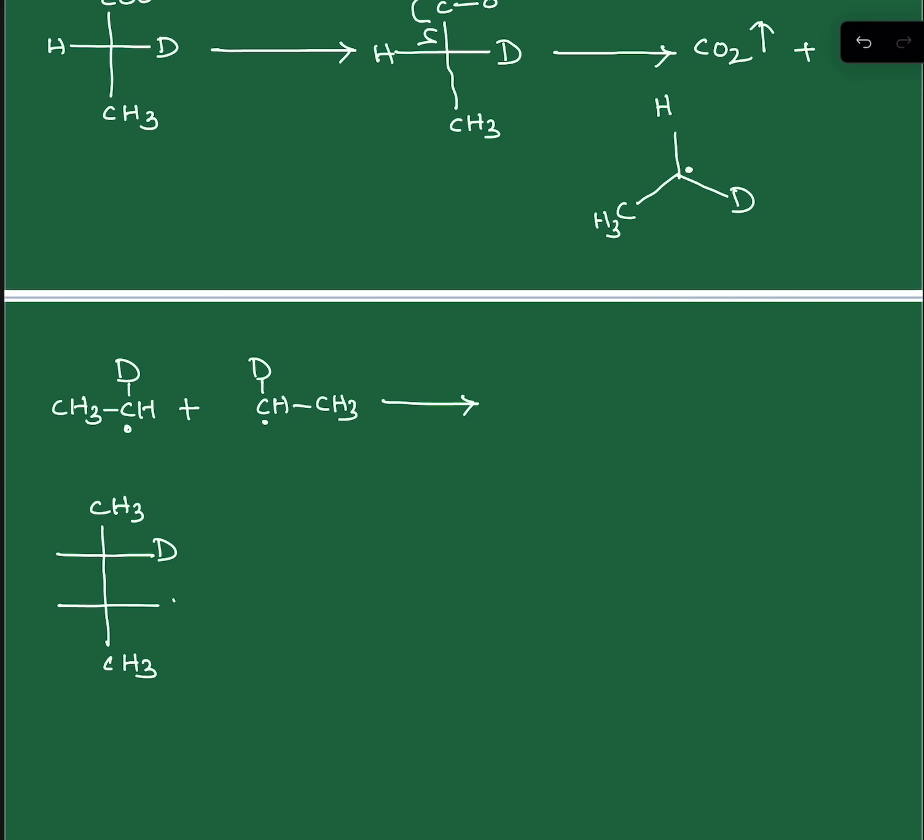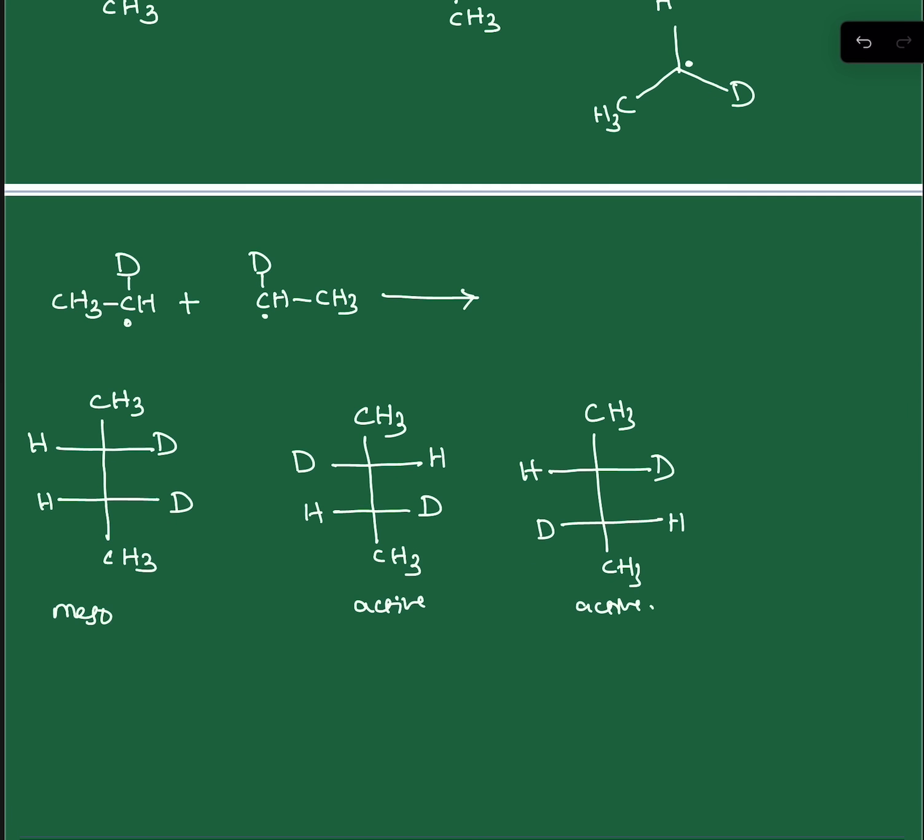Here we have CH3, CH3, deuterium, deuterium, hydrogen, hydrogen. And this is a meso structure, a mesoisomer. Next possibility: deuterium on opposite sides in Fisher projection formula. This is active form. And one more possibility with hydrogen, deuterium, deuterium, hydrogen, and CH3. This is also active. So totally, three products are possible.